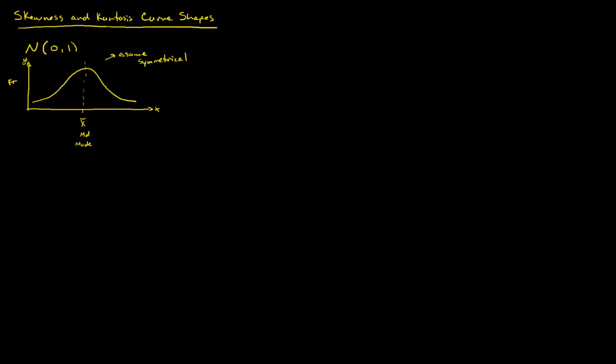Let's look at skewness. These are just shapes — in another video we've already talked about how to calculate the math behind this as a deviation from zero. If this is the standard normal, then we want to show what skewness looks like.